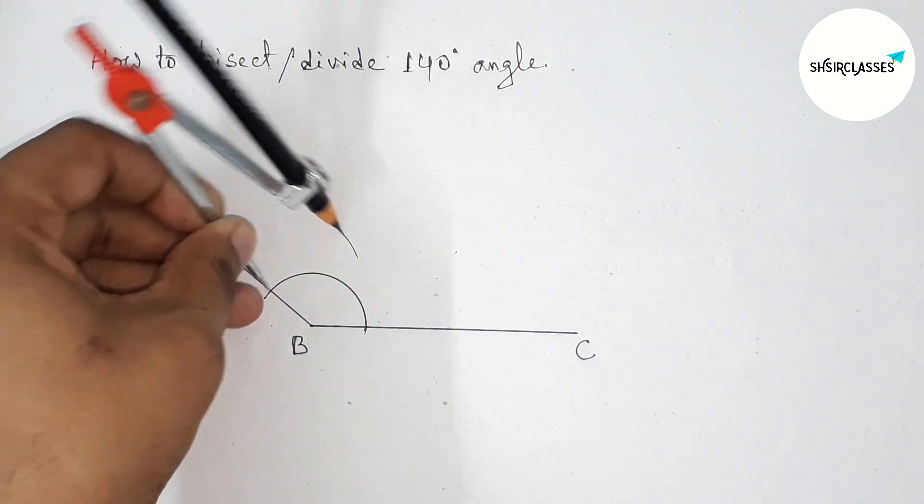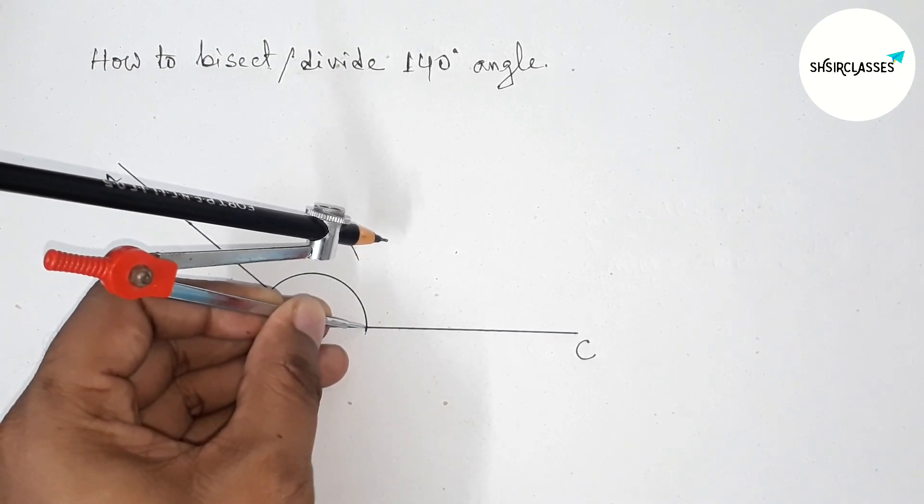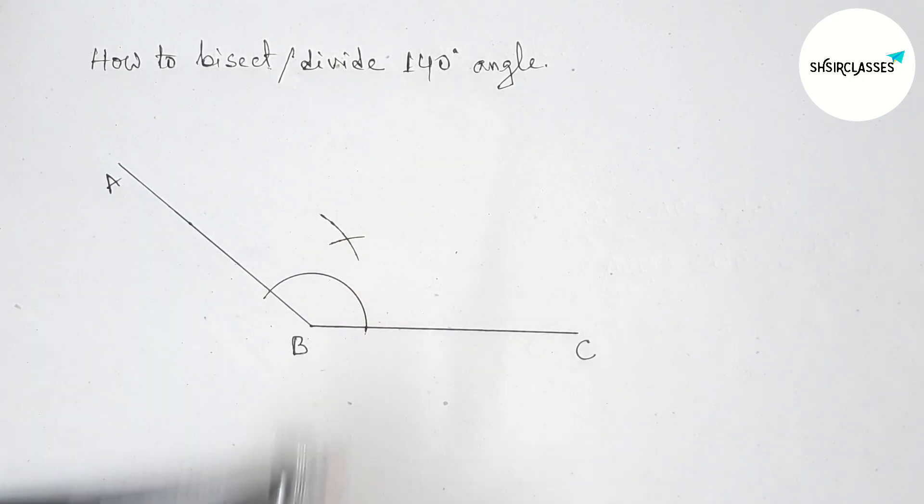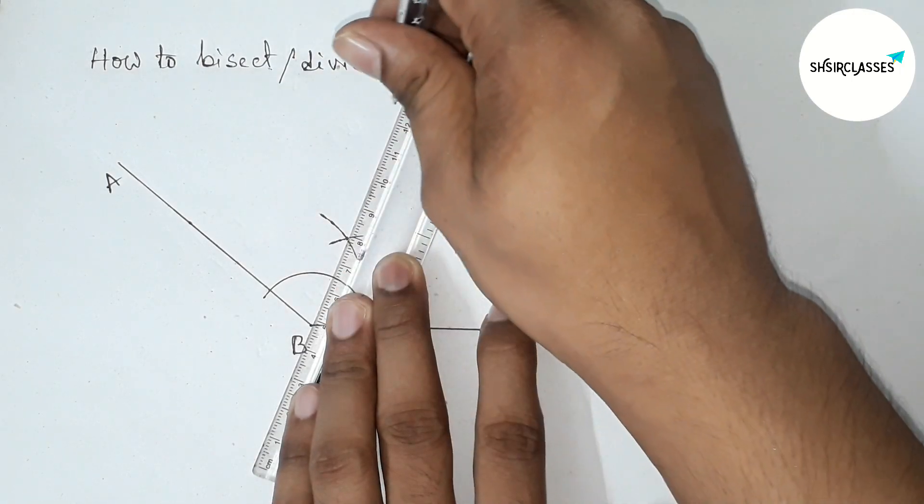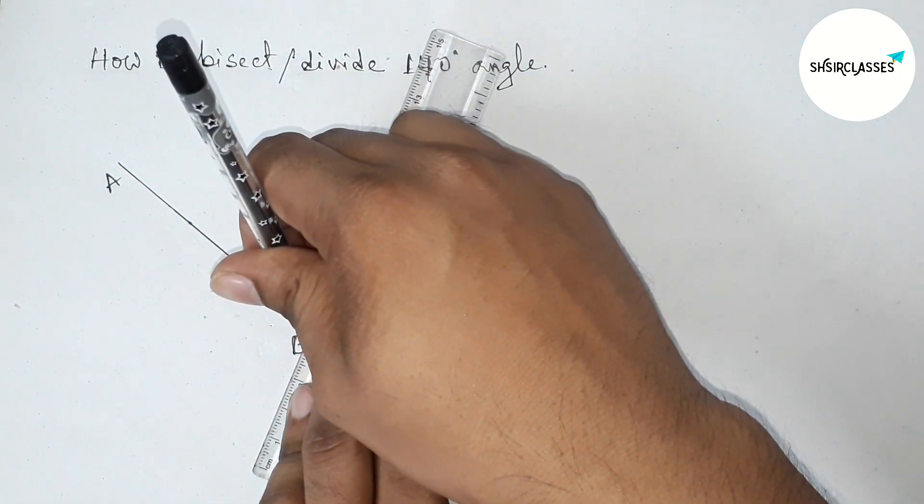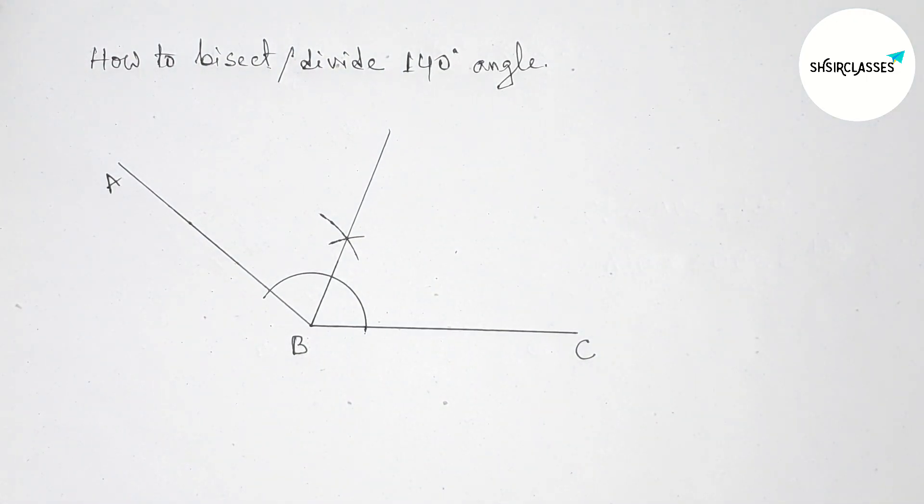Drawing arc here and putting the compass here first and we have to cut here. Okay, so next joining this line which bisect the angle 140 equally, perfect. Okay, so now taking point here D.